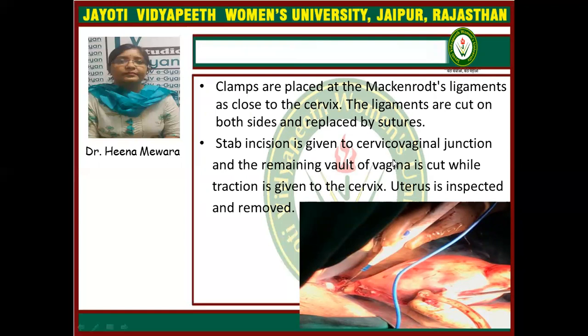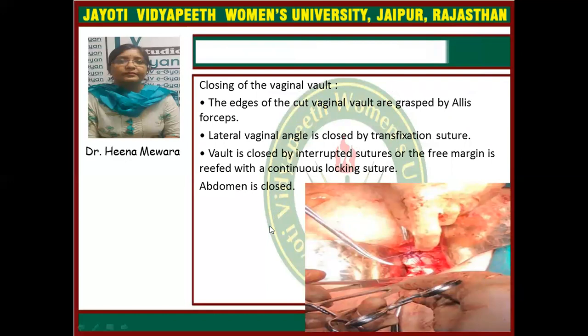A stab incision is now given to the cervicovaginal junction and the remaining vault of vagina is cut while traction is given to the cervix, and the uterus is inspected and removed. This diagram shows how the stab incision is given on the cervicovaginal junction and after that uterus is removed and inspected. After removal of the uterus, closing of the vaginal vault is done. The edges of the cut vaginal vault are grasped by Allis tissue forceps. Lateral vaginal angles are closed by transfixion suture and the vault is closed by interrupted suture or the free margin is wrapped with a continuous locking suture. After that, the abdomen is closed.